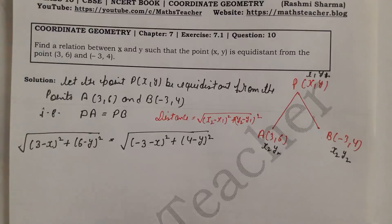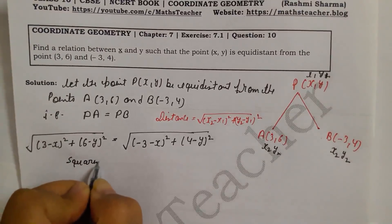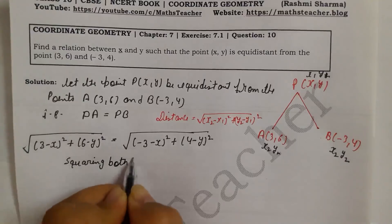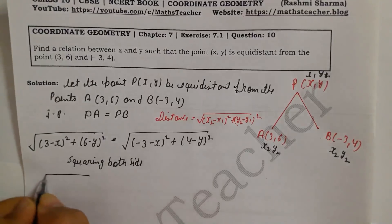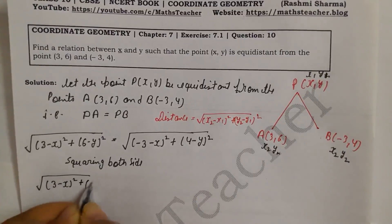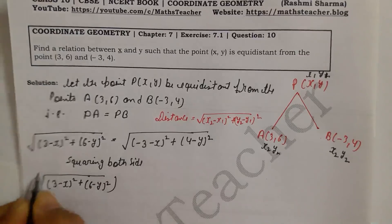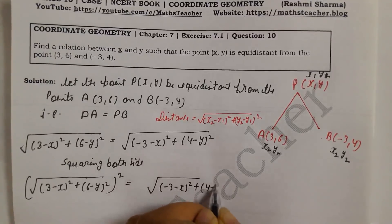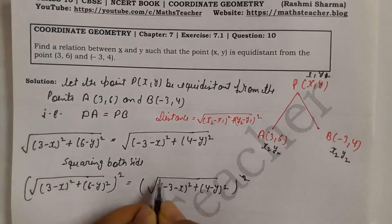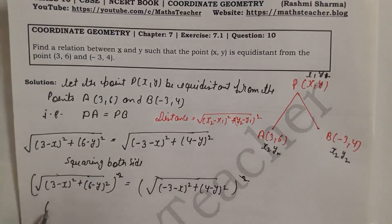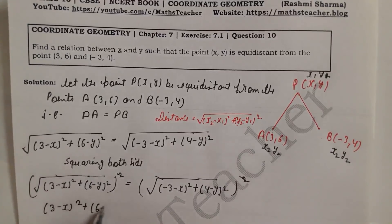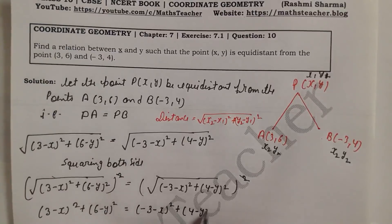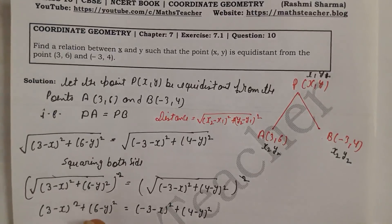Squaring both sides cancels the square roots. So we get: (3 - x)² + (6 - y)² = (-3 - x)² + (4 - y)². Now we expand each term using the identity (a - b)² = a² - 2ab + b².